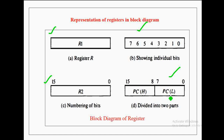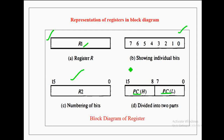In the fourth case, the register is divided into two equal parts. Here the register name is PC, the program counter. PC(L) indicates the low byte, representing bits 0 to 7, and PC(H) indicates the high byte, representing bits 8 to 15. Out of these methods, the first one is the simplest and most widely used.